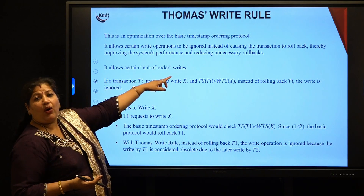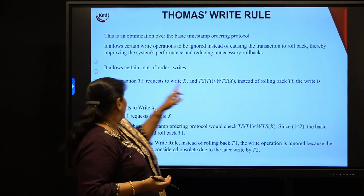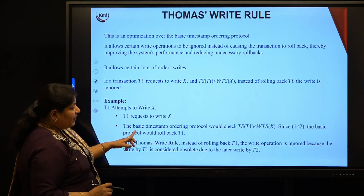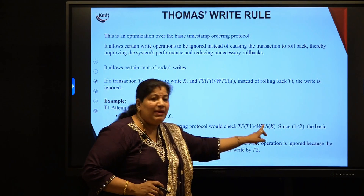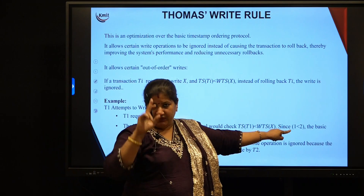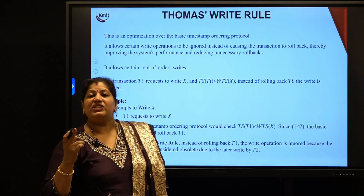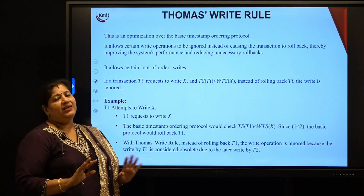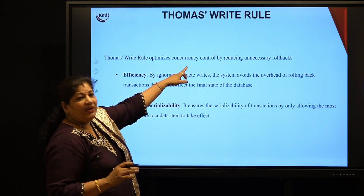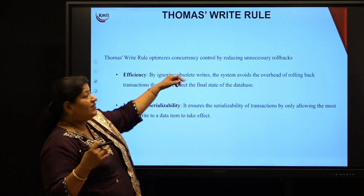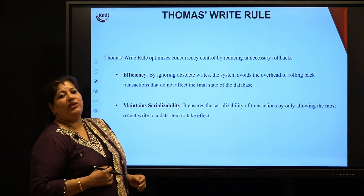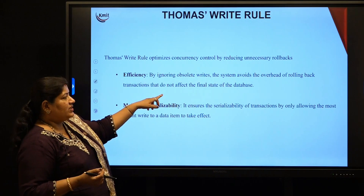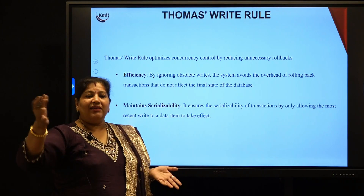It allows certain out-of-order writes. Instead of rolling back Ti, the write is just ignored. In our previous example, when T1 requests a write, the basic timestamp ordering protocol would roll it back because TS(T1) = 1 is less than WTS(x) = 2. But in the Thomas Write Rule, you do not roll back — just ignore the write operation. The system avoids the overhead of rolling back transactions which do not actually affect the final result of the database. It also ensures serializability by only allowing the most recent write to a data item to take effect.